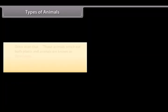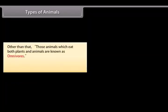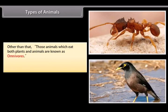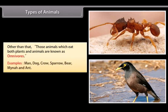Other than that, those animals which eat both plants and animals are known as omnivorous. Examples include man, dog, crow, sparrow, bear, myna, and ant.